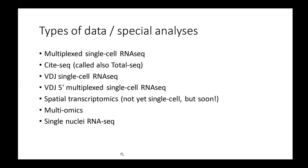You can have a multiplexed single cell RNA-seq, you can have CITE-seq or sometimes it's also called Total-seq, you can have RNA single cell RNA-seq combined with VDJ information so the TCR information, and you can have the same option but with a multiplexed version which is a little bit more complicated. Spatial transcriptomics is not yet at the level of single cell, but it should be coming at some point.